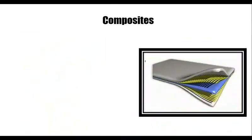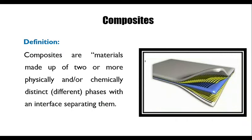Coming to the definition of composites, composites are materials made up of two or more physically and or chemically distinct phases with an interface separating them.